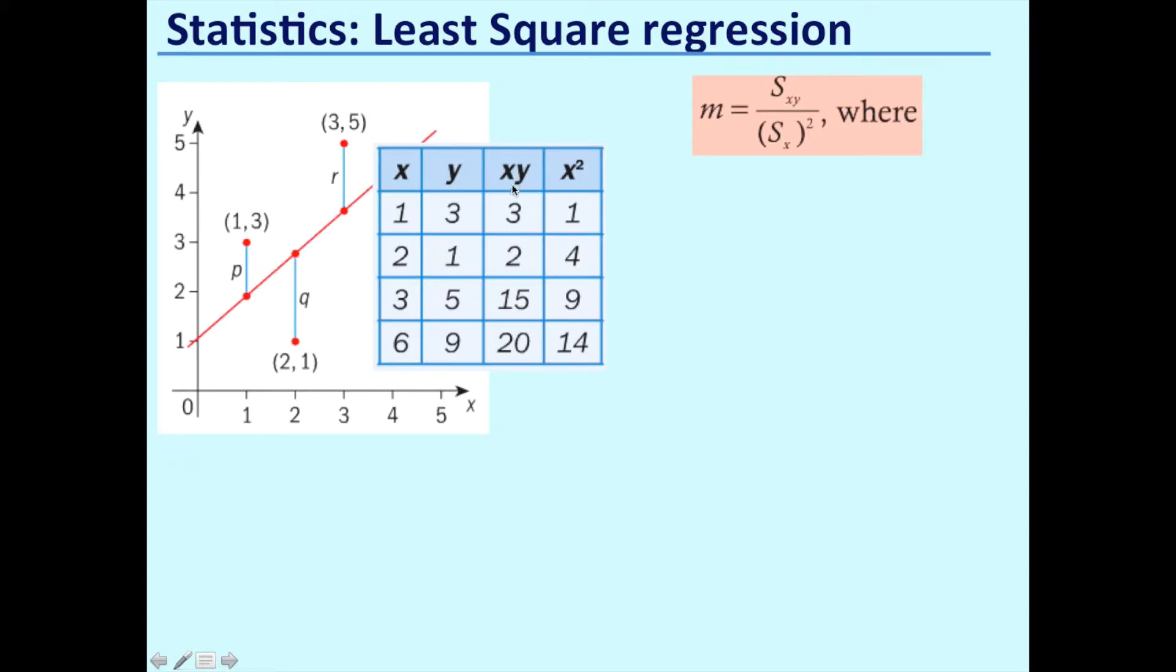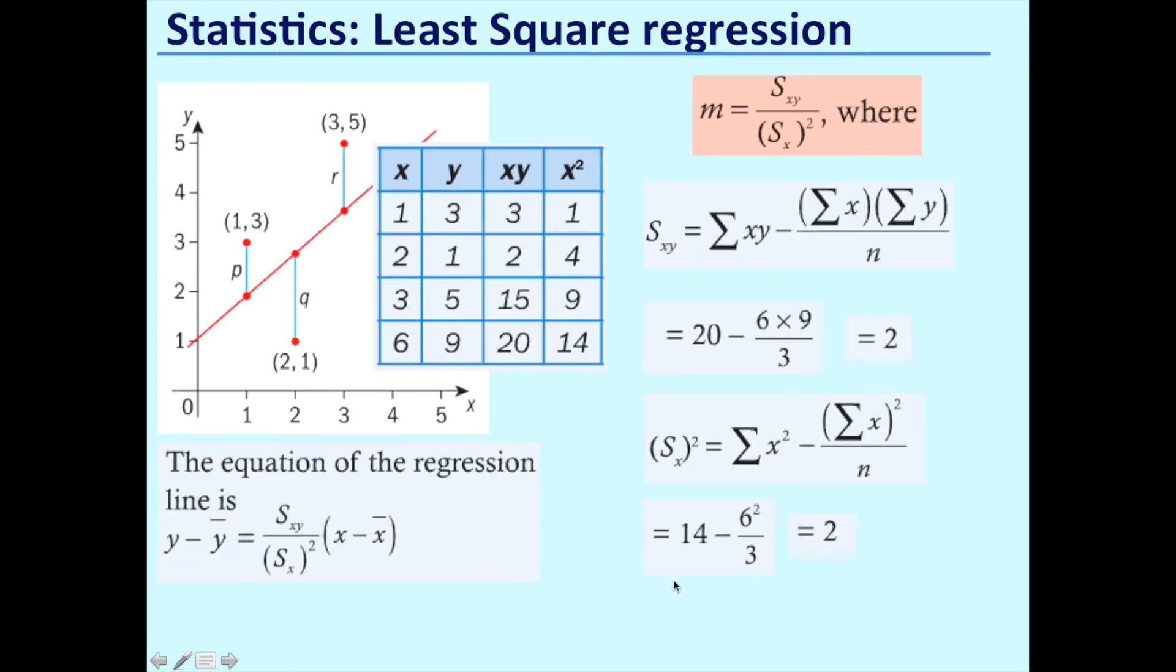Here are our examples and we want to find the least squares regression formula to find the regression line. First, we're going to put in this extra column x times y. These are just our x values: 1, 2, and 3, and the corresponding y coordinates are 3, 1, and 5. We then multiply x by y in this column and square x in this column. Now we can apply this formula. Sxy is the sum of x times y, which is 20, minus sigma x (which is 6) multiplied by sigma y (which is 9) all over n. So that's going to give us 2.